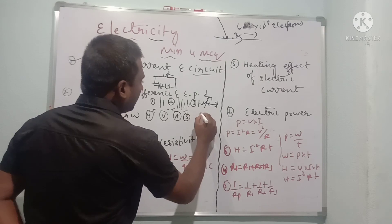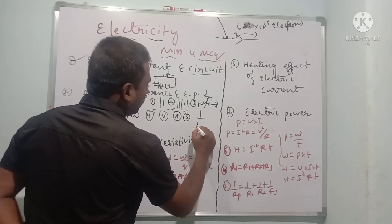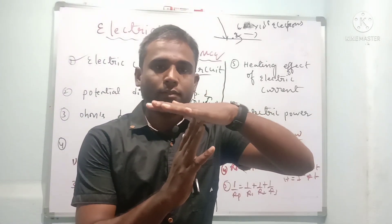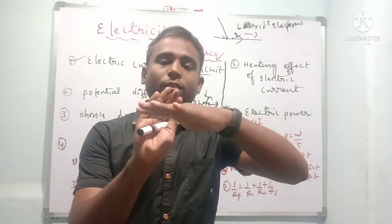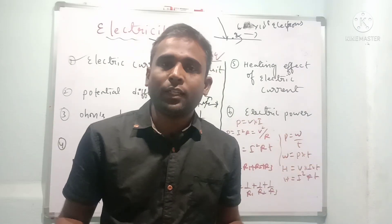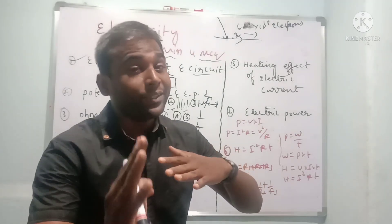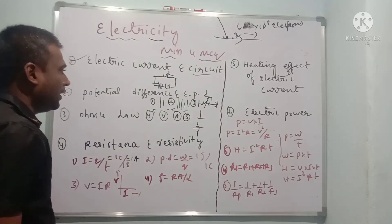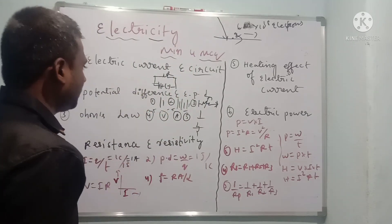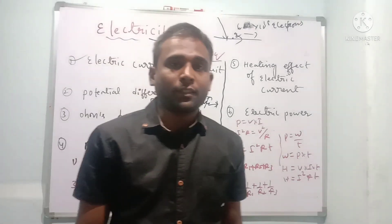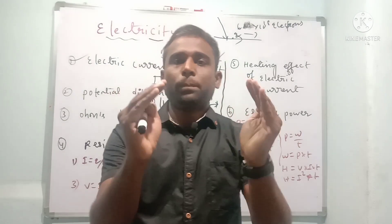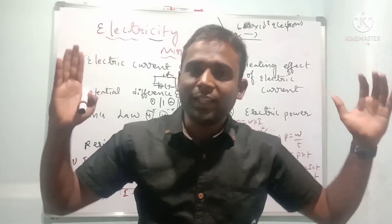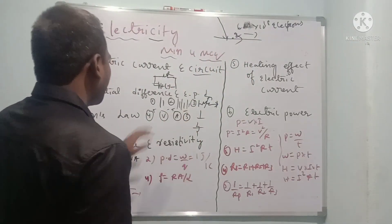Next we discuss cut wire and joint wire. Where a gap is present, that is called a cut wire. Where no gap is present, that is called a joint wire. Last, open plug key and closed plug key — a dot inside indicates a closed plug key. We have now discussed all electrical symbols.